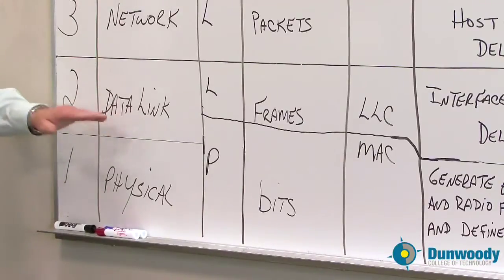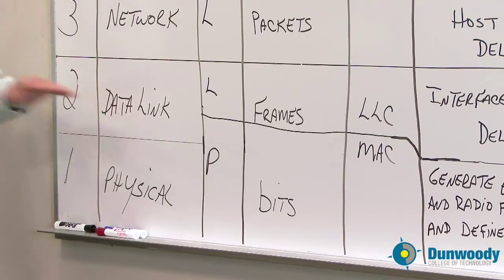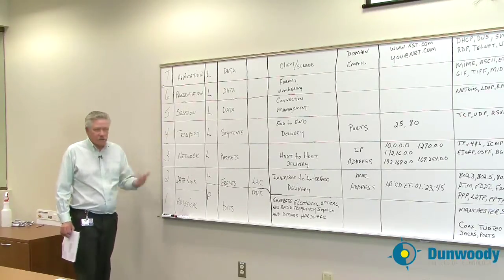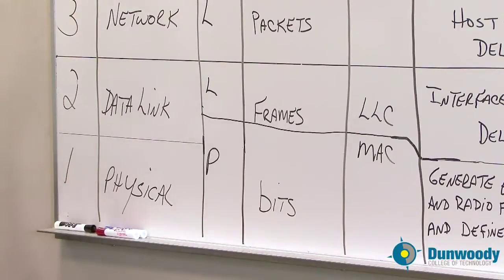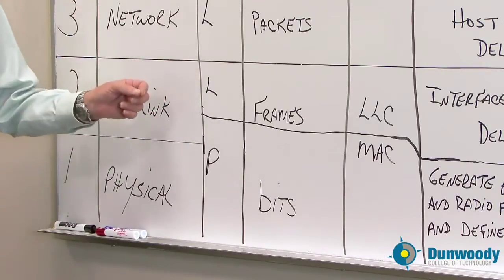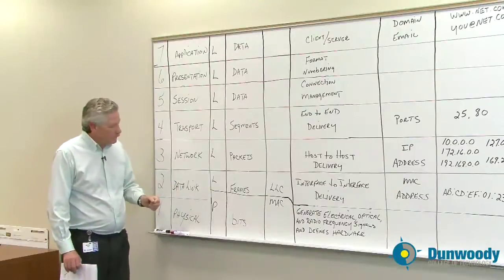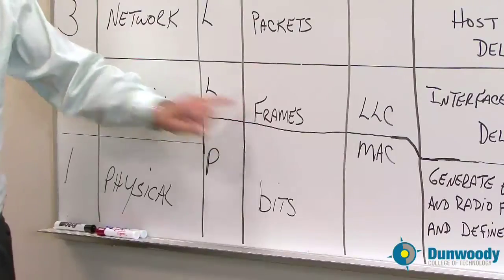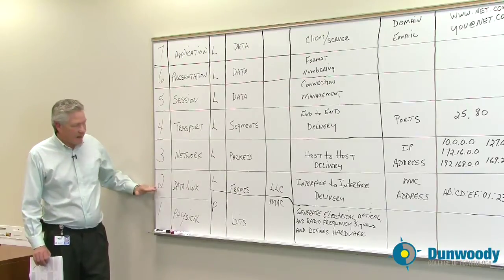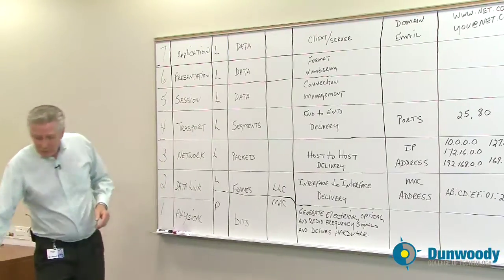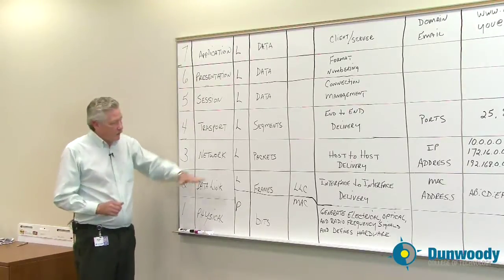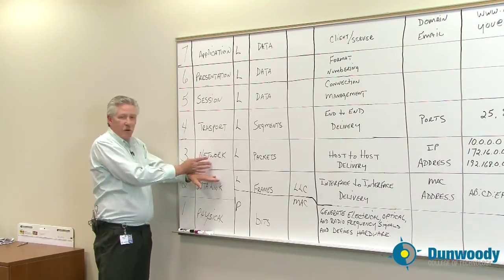The data link layer — I consider half of it being physical also, because it's a network interface card. It's a circuit board with diodes and transistors. But the other half of that is logical, meaning it works off of firmware — it's not something you can touch. The PDU at that level is called frames. They're called frames because by the time the PDUs come down the stack and get to the data link layer, it's framed. The back end of the packet is framed with what's known as a CRC, and that's why we call it a frame. Up until that point, all the other layers only add a header.